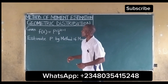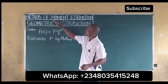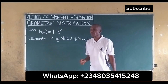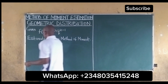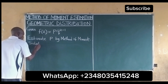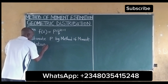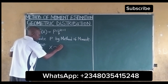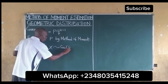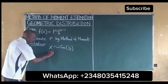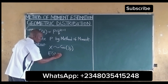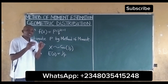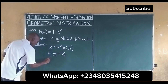In this video we shall estimate using the method of moments for the geometric distribution. We should note that for the geometric distribution, x follows a geometric distribution of 1 over p. It then means that the expected value of x is equal to 1 over p. The solution to the method of moments gives you the following.